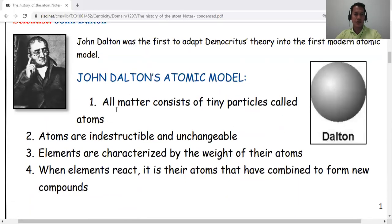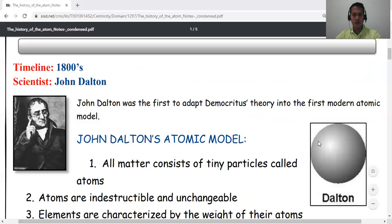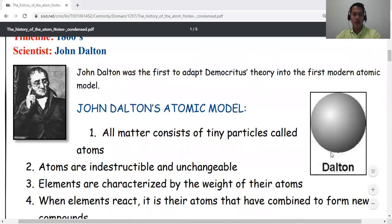Now let's go to John Dalton. The timeline is 1800s. John Dalton was the first to adopt Democritus's theory. If we look at his model, it's going to look the same as Democritus's model. All matter consists of tiny particles.